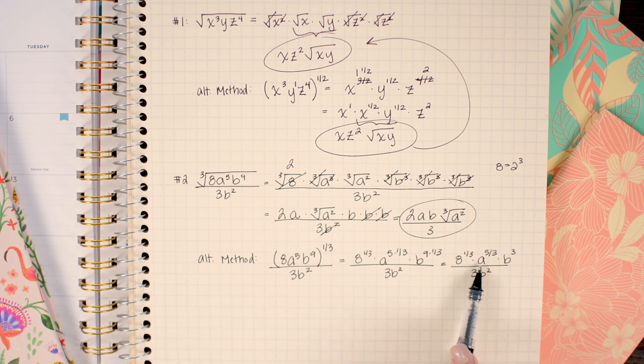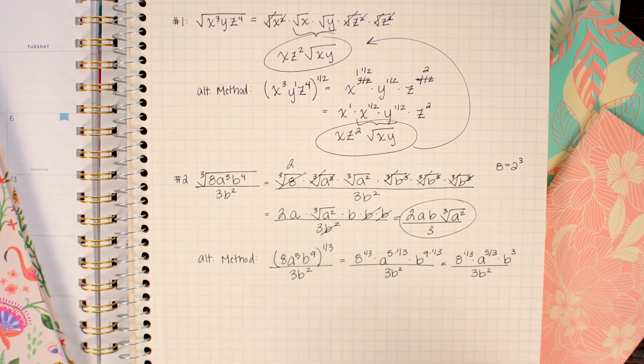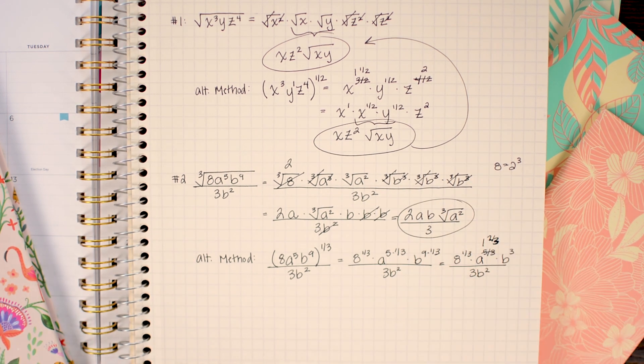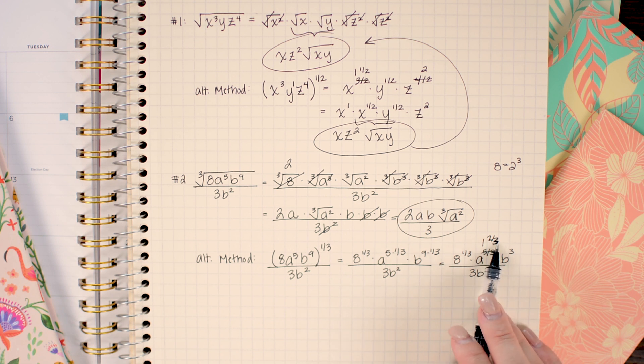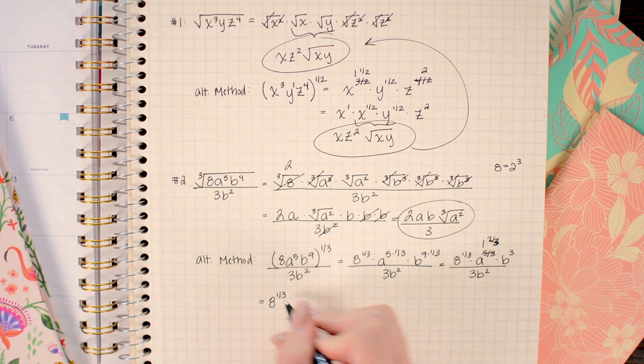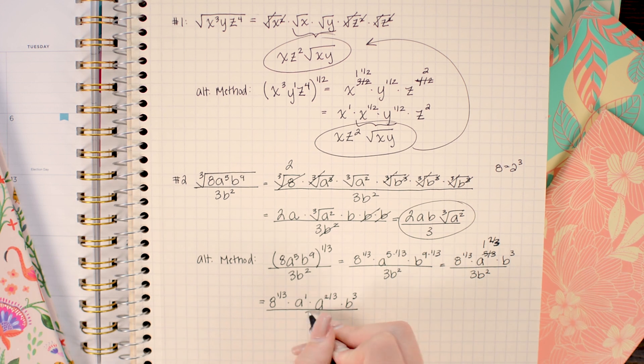At this point, I can go ahead and rewrite the five thirds as a mixed number. So that's going to be one and two thirds. That means that I can write a to the first power times a to the two thirds power. Of course, we're free to cancel out the b squared of the denominator with two of the b's from the numerator.